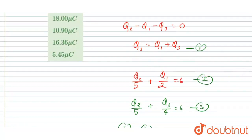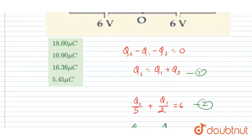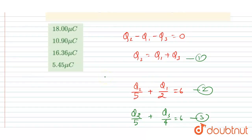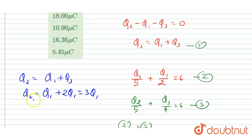We got the relation between q1 and q3: q3 equals 2q1. Putting that value into equation 1: q2 equals q1 plus q3, and since q3 equals 2q1, we get q2 equals q1 plus 2q1, which equals 3q1. So q1 equals q2 by 3.